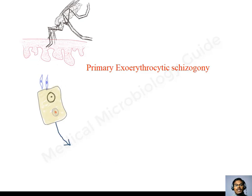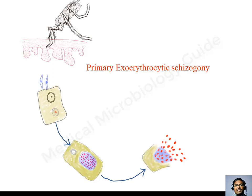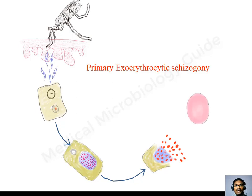They will be taken into a parasitophorous vacuole and this vacuole will protect the sporozoites in the cytoplasm of the hepatocytes. In the hepatocytes, the sporozoites will get converted into trophozoites, and trophozoites will start multiplying to form the merozoites. Around 10,000 to 30,000 merozoites are formed in the hepatocytes and they will be released into the blood. This hepatic portion of the life cycle is called primary exoerythrocytic schizogony.